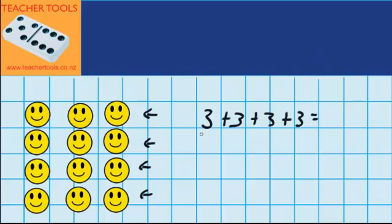So I can use my skip counting. 3 plus 3 is 6, plus 3 is 9, plus 3 is 12. Now, you can see that that is the same as saying 4 groups of 3 equals 12. I got this 4 because I can see 1, 2, 3, 4 groups, and I got this 3 because there are 3 smiley faces in each group.